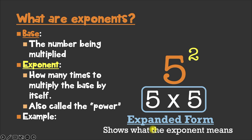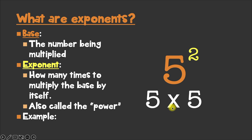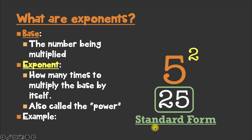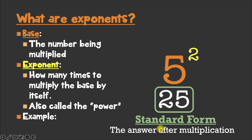And when it's written like this, it's called the expanded form. The expanded form is just showing you what the exponent means. When we work this math out, what we get is 25, and this is called the standard form. That's the answer you get after you work out all the multiplication. So we've got 5 to the second power — that's our exponential form. We had 5 times 5 as our expanded form, and then after we work it out, we get 25, which is our standard form.